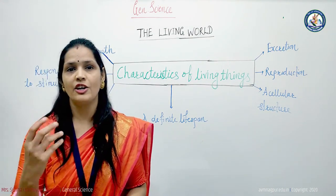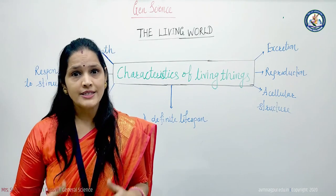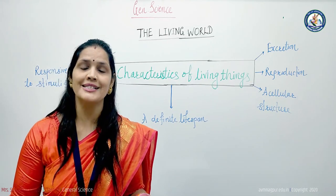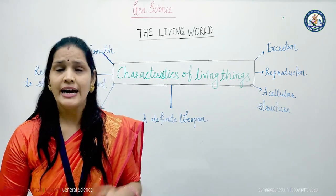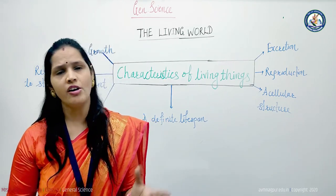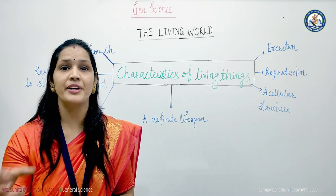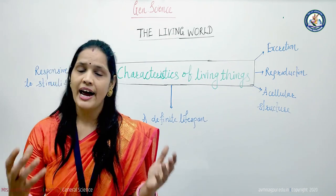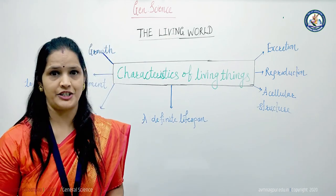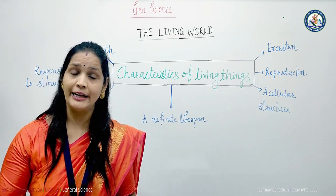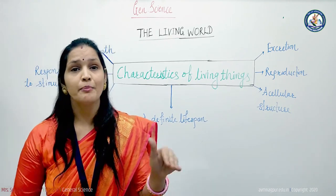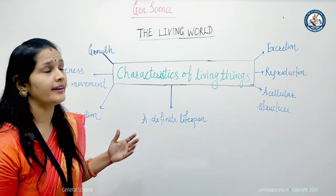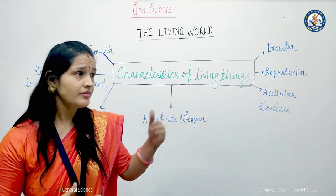The third characteristic of living things is respiration. All living things need oxygen in order to live. Inhaling oxygen and exhaling carbon dioxide from the body due to the use of oxygen is called respiration. Respiration is the main characteristic of all living organisms. Animals such as snakes and fish have specific organs for respiration. Plants also receive oxygen by means of microscopic pores on their stems and leaves.